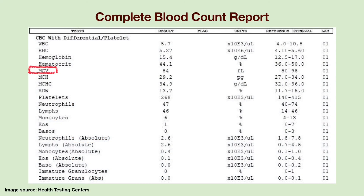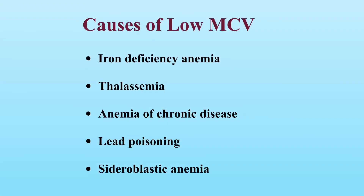People may receive a CBC report showing the value of MCV below the normal range. What are the causes for low MCV? The most common causes of low MCV are iron deficiency anemia and thalassemia. Thalassemia is caused by mutations of the genes that encode alpha or beta chains of hemoglobin. The mutated genes are passed from parents to their children.